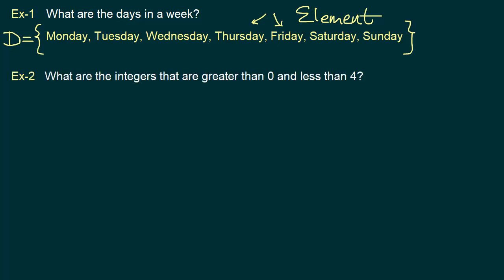Let's take a look at a second example: what are integers that are greater than 0 and less than 4? We know the integers that fit this criteria are 1, 2, and 3. These are the three integers which are greater than 0 and less than 4, so these are the integers that belong to our set. We separate them by comma, put a starting and closing curly bracket, and because these are integers, let's represent this set by uppercase letter I.